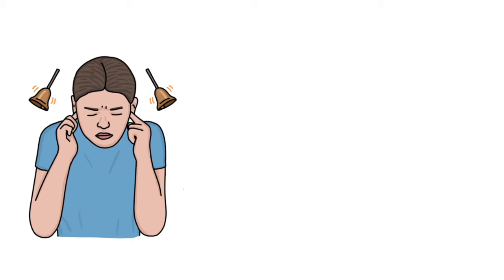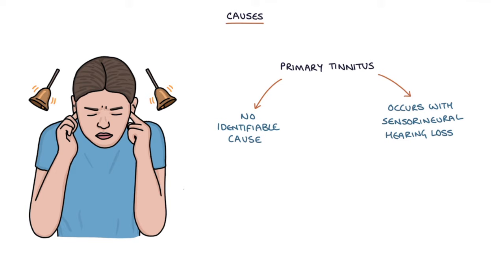Let's talk about the causes. Primary tinnitus has no identifiable cause and often occurs with sensorineural hearing loss. So in someone who has sensorineural hearing loss, they may experience primary tinnitus.